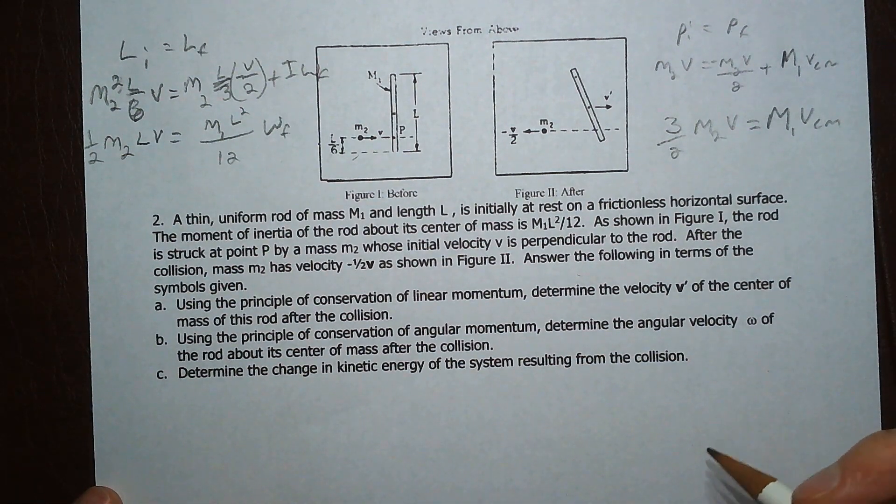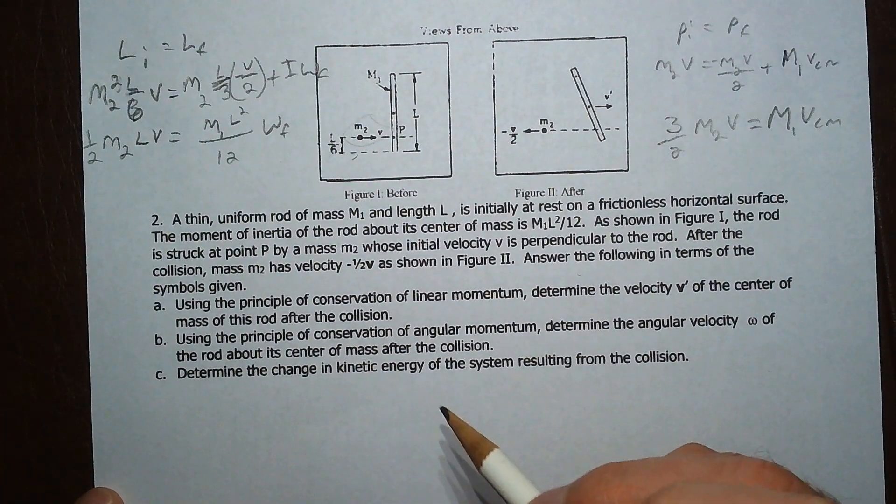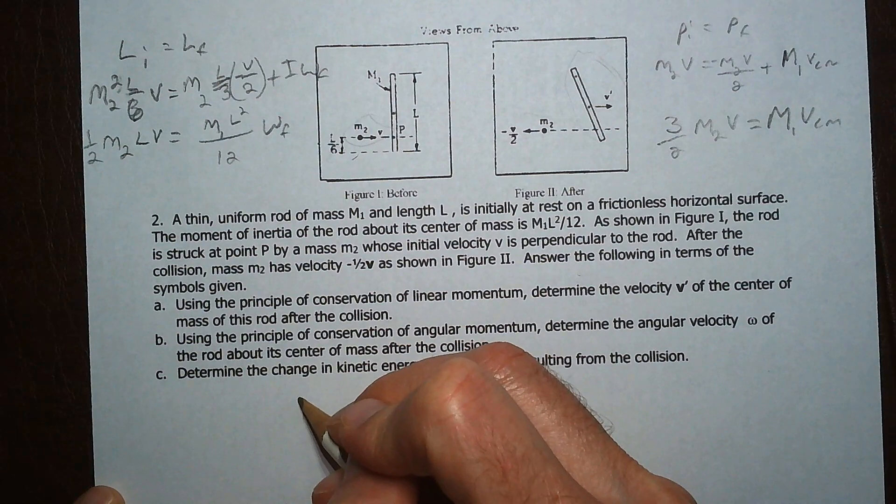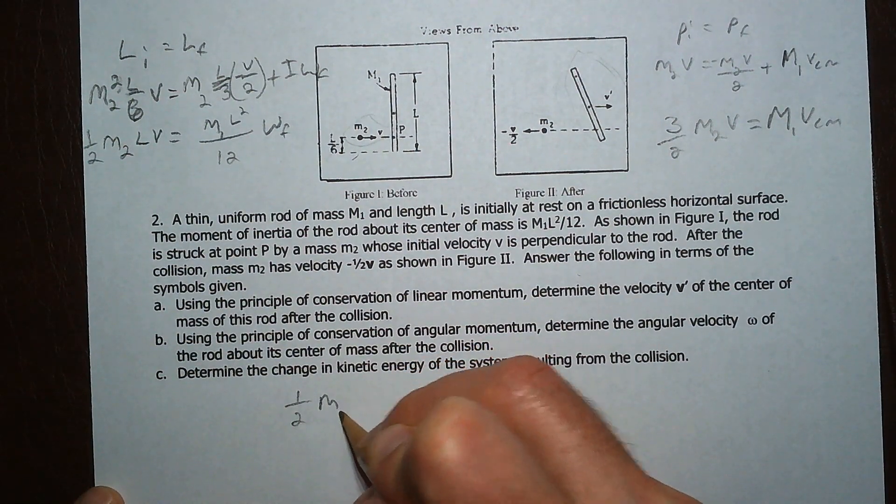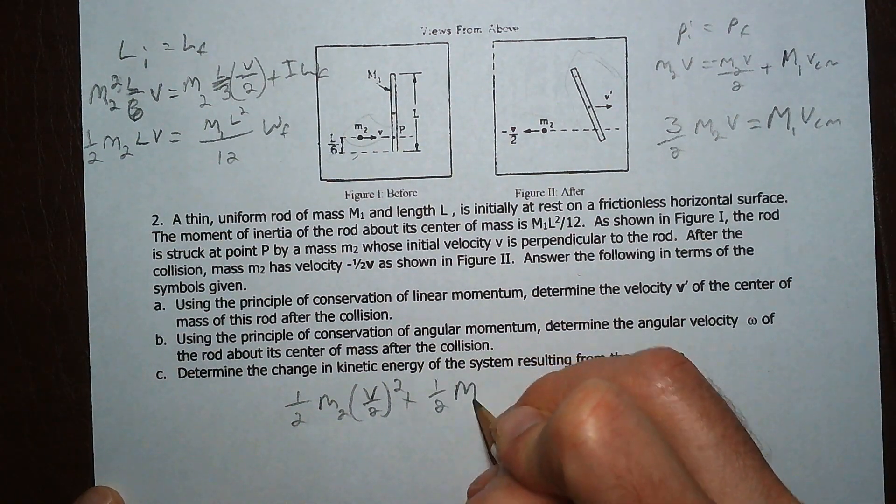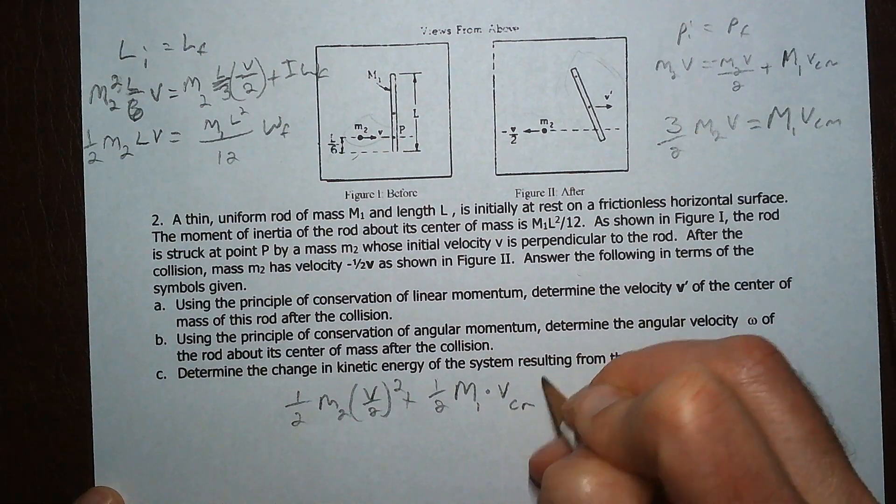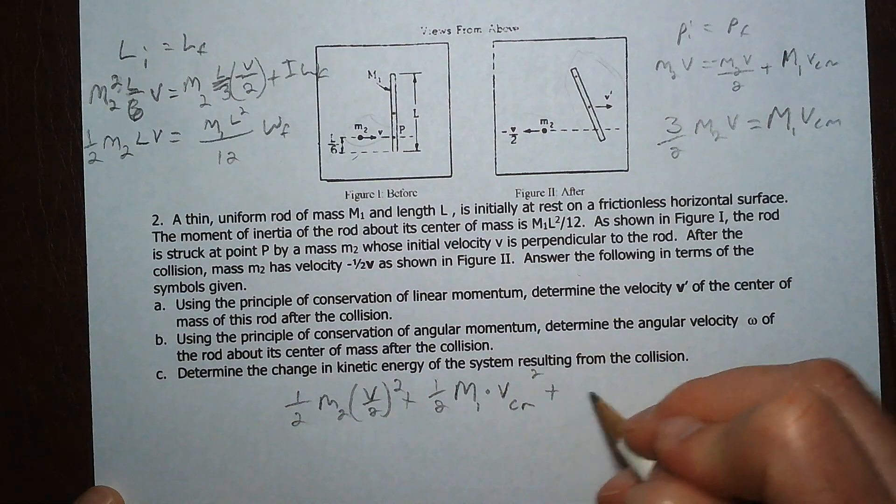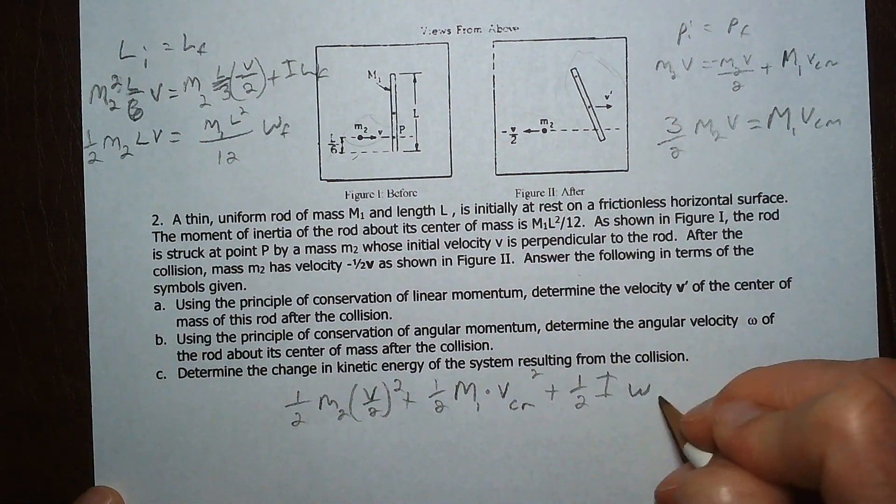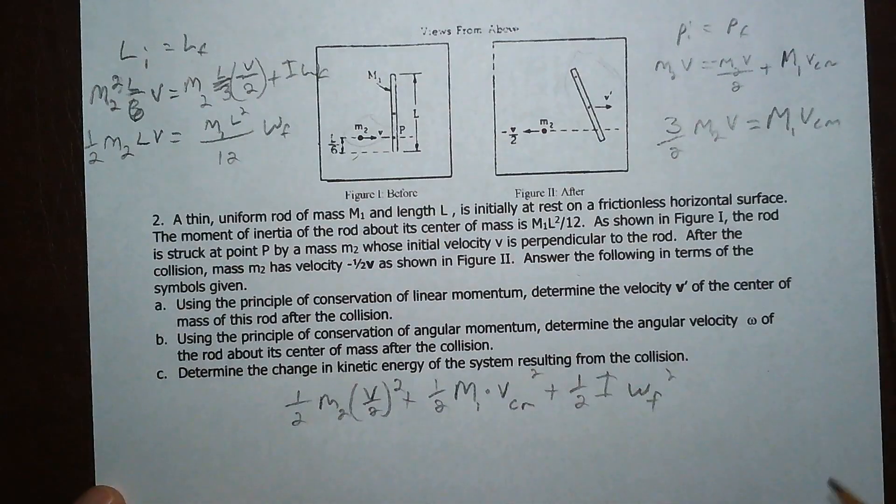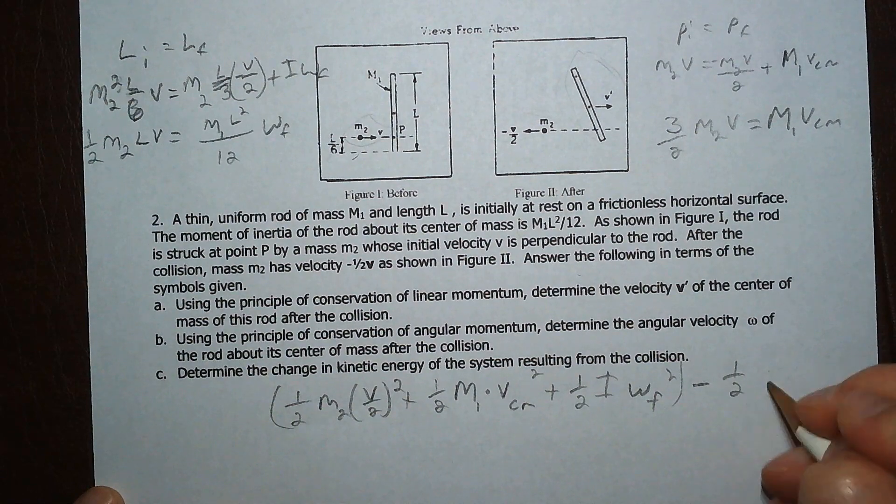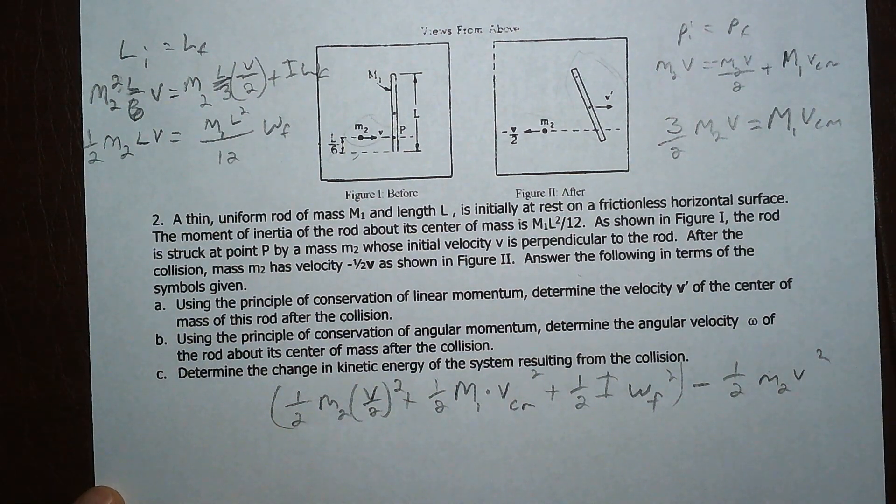Okay, to figure out the change in energy, only this one has energy in the very beginning. At the end, we have a translational kinetic energy, so this is going to be 1 half M2V over 2 squared, plus 1 half M1 times the velocity of center mass squared that we found up here. So plus 1 half I, or this is I, so I'll just put I for now, omega final squared, and remember we found omega final here. So that's going to be the final energy minus 1 half M2V squared. So anyway, there's that one.